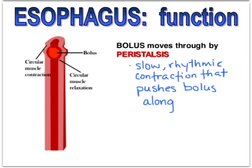Peristalsis moves the bolus down the esophagus through rhythmic muscle contractions. It's best described as squeezing an elastic tube just above a tennis ball all the way down — those rhythmic muscle contractions push the bolus along. This peristaltic action continues throughout the entire digestive tract, but it begins in the esophagus.